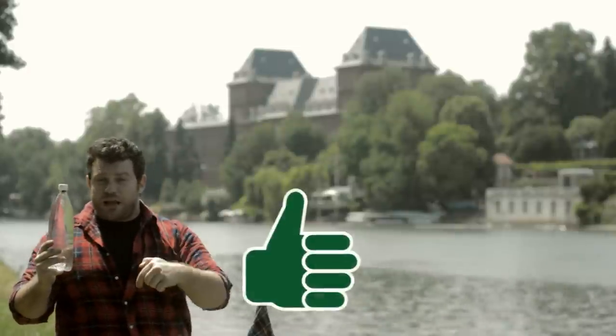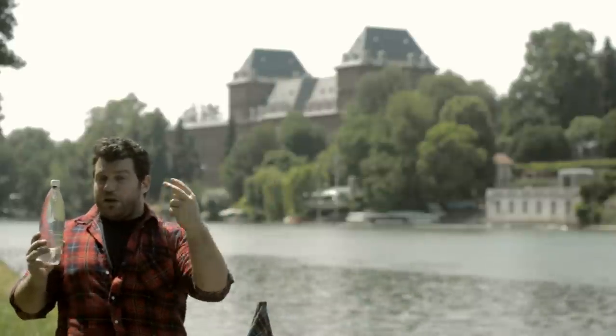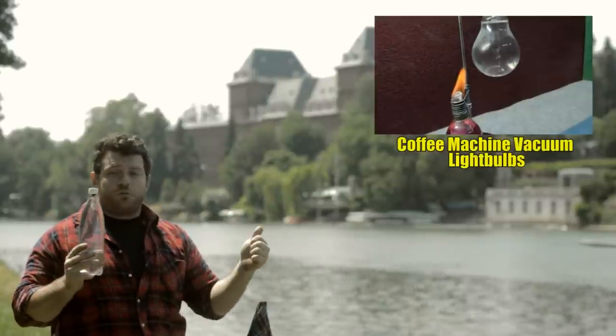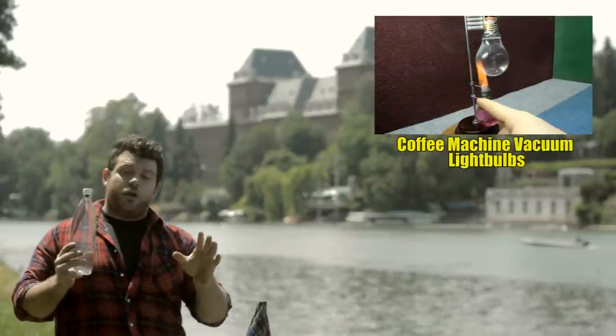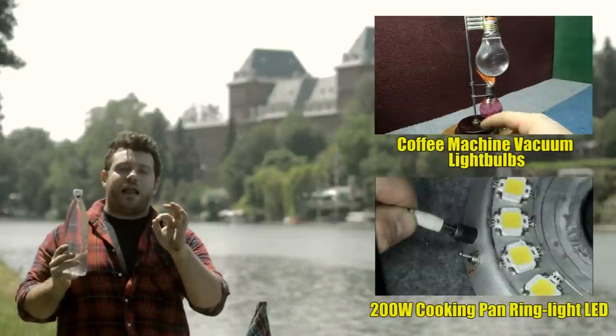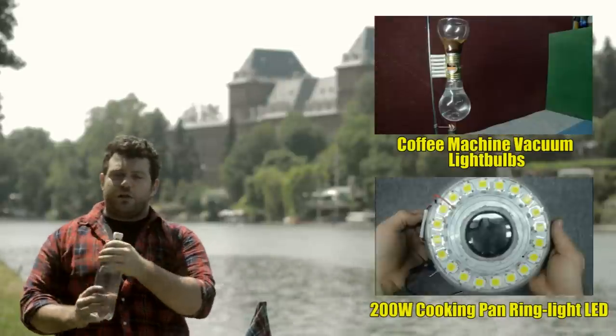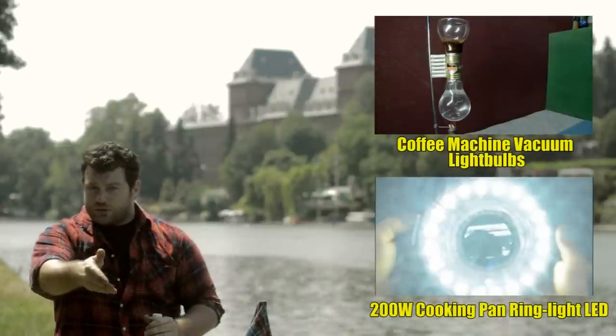So let me know below with a thumbs up. And as always I leave you with my 2 past projects, how to make a vacuum coffee machine inside two old broken light bulbs and also how to make a cooking pan LED ring light which is the light I use to record my video tutorial, this tutorial.